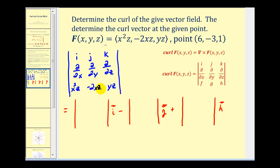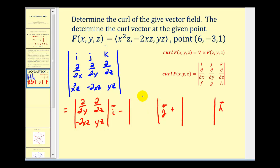To evaluate this we'll use the cofactor expansion method. For the first two by two determinant we eliminate row one and column one, giving us the partial derivative operators with negative two xz and yz. For the second minor we eliminate row one and column two, giving us the partial derivative operators with respect to x and z, along with x squared z and yz. For the third minor we eliminate row one and column three.